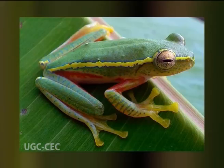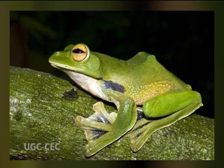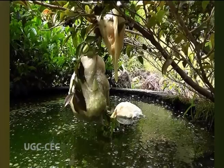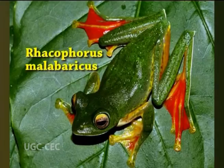Rhacophorus is commonly called flying frog. The body is slender. The limbs are thin and long with large feet having well-developed web between the digits of all four limbs, and the digits bear rounded adhesive pads as in Hyla. It lives in trees and can glide with outstretched limbs from tree to tree or from a tree to the ground. It also exhibits parental care by depositing eggs in nests bearing water. It has the capacity to change color rapidly. Rhacophorus malabaricus is found in India. Rhacophorus pardalis is a Japanese flying frog.